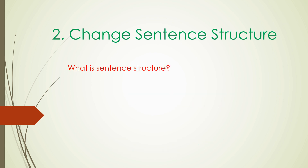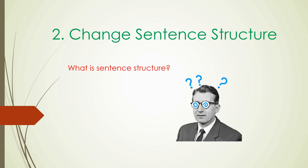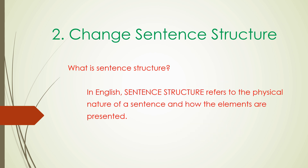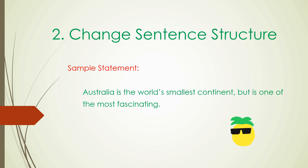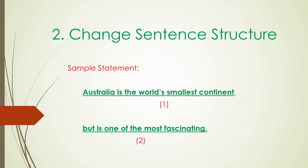The second paraphrasing style is to change sentence structure. So, what is sentence structure? In English, sentence structure means the physical nature of a sentence and how the elements of a sentence are presented. Look at the sample statement: Australia is the world's smallest continent but is one of the most fascinating. Now, look at what I did — it is a two-part sentence and I marked each part as number one and number two.